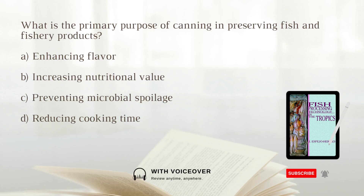What is the primary purpose of canning in preserving fish and fishery products? A. Enhancing flavor. B. Increasing nutritional value. C. Preventing microbial spoilage. D. Reducing cooking time. Answer: C. Preventing microbial spoilage.